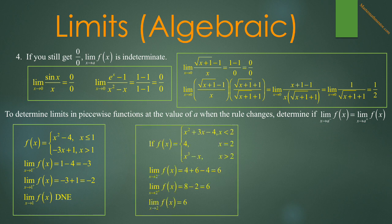In the next piecewise function, we want to find the limit of f of x as x approaches 2. The left-hand limit, plugging in, gives 6. The right-hand limit, plugging into x cubed minus x, gives 8 minus 2, which is also 6. So the limit of f of x as x approaches 2 is 6. Note that f of 2 is 4, which has nothing to do with the limit.